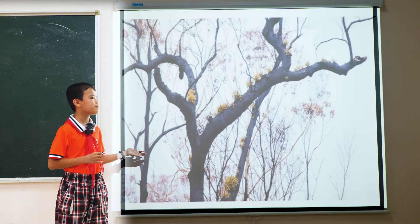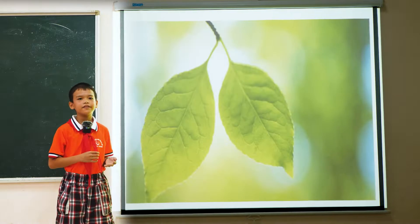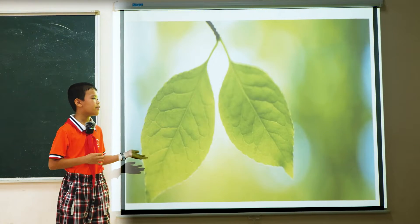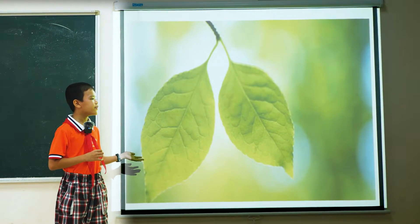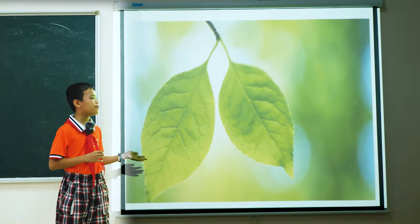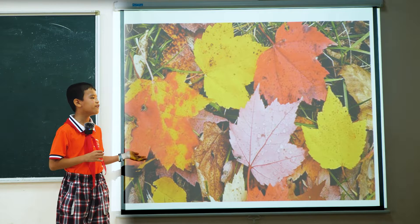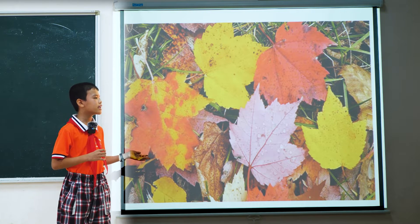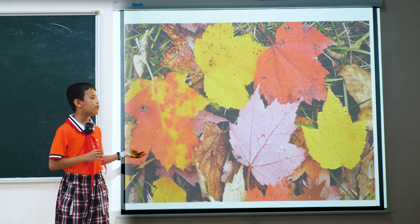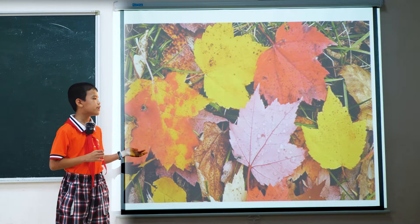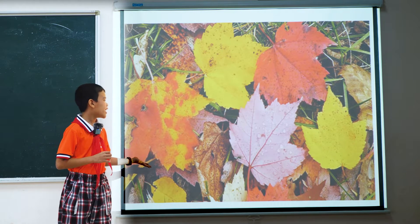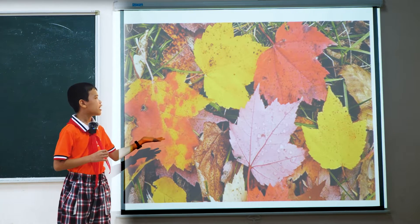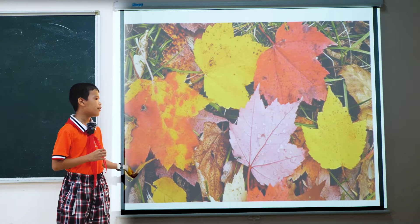What about leaves? Leaves collect sunlight and make food for plants. Different strains of plants have different kinds of leaves. Their colors change in season. For example, an autumn leaf can be red, yellow or orange.